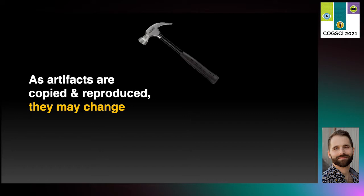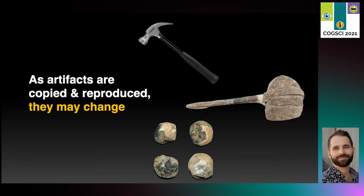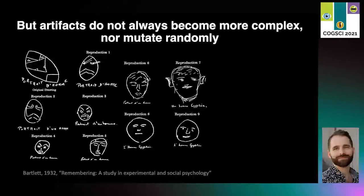For example, the predecessor of this modern hammer includes a Paleolithic hammer from around 33,000 BCE, and hammer stones which were used about 3.3 million years ago. But artifacts don't always become more complex as they're transmitted, nor do they simply mutate randomly. As an example of this, we can consider Bartlett's classic work from 1932.